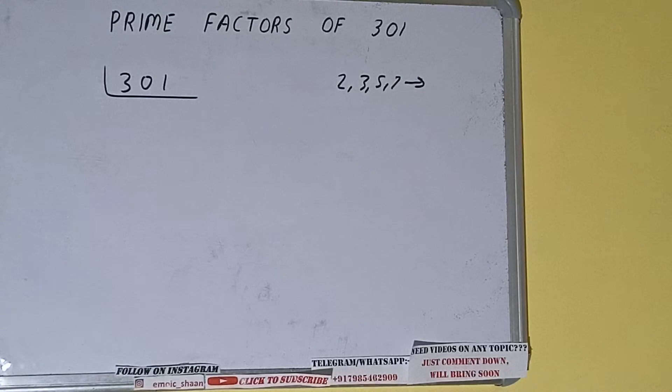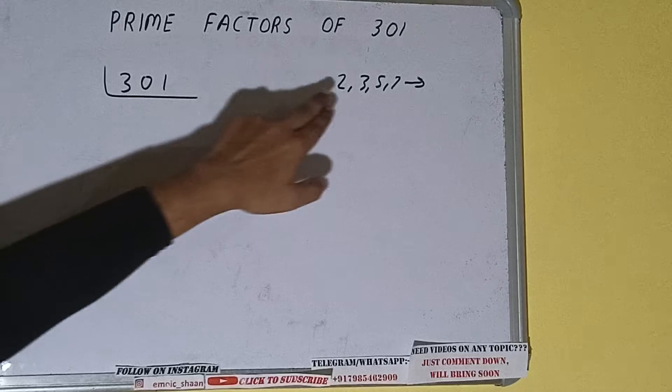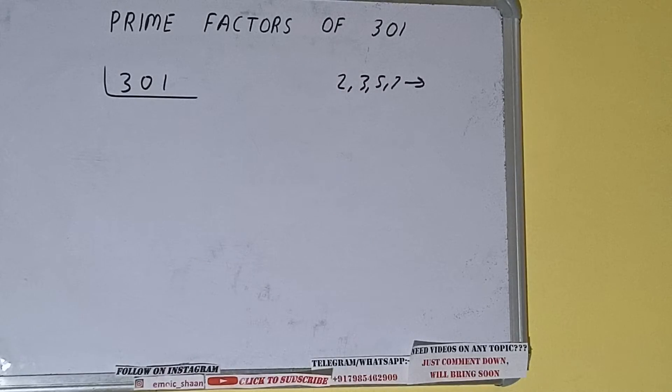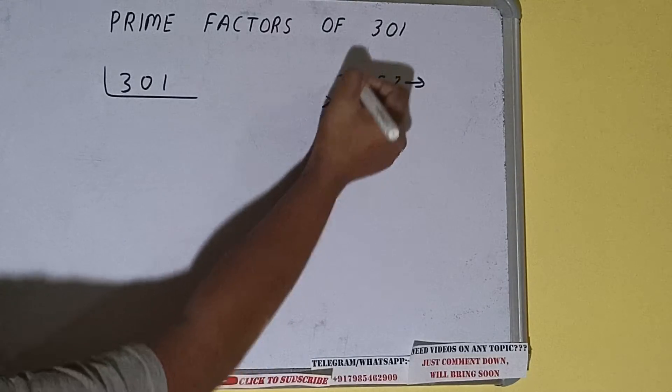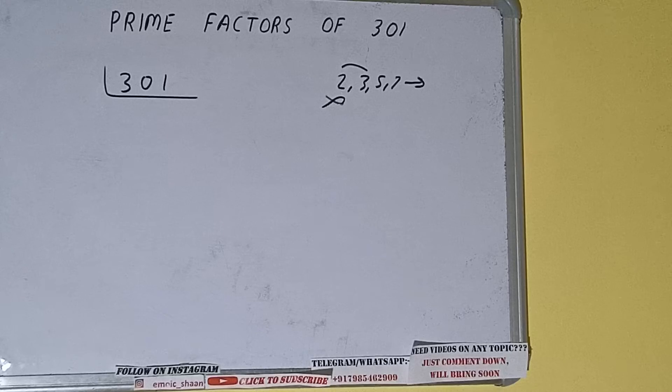Clearly not, because the number is odd. So we'll be going to the next lowest prime number, that is 3. Is the number 301 divisible by 3? We need to check: 3 tens of 30, 1 left with 3. Also, it is not divisible.